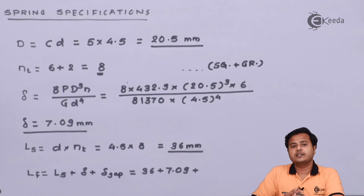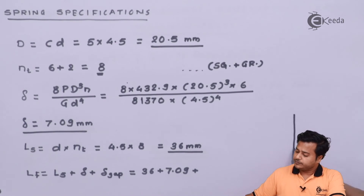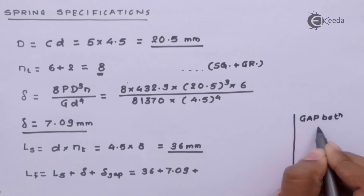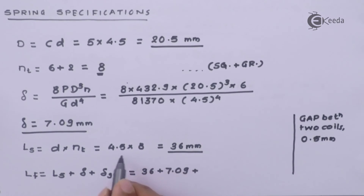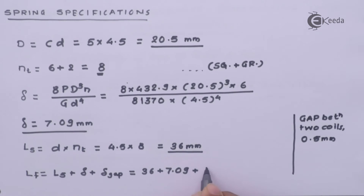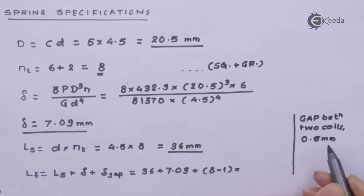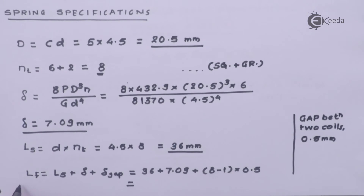We assume a gap of 0.5 millimeters between adjacent coils. The total gap between all coils is calculated as the total number of coils minus 1, which is 8 minus 1, multiplied by the individual gap of 0.5 millimeters. After solving, the free length comes out to be approximately 51 millimeters, and with that we have found all the specifications for this spring.